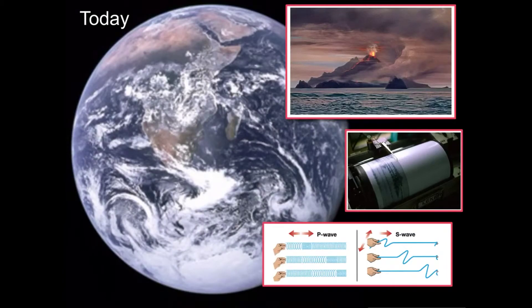Today we know that volcanoes and earthquakes create vibrations that travel through Earth as seismic waves. P and S waves can be interpreted and allow us to locate where the earthquake or eruption occurred and how strong it was.